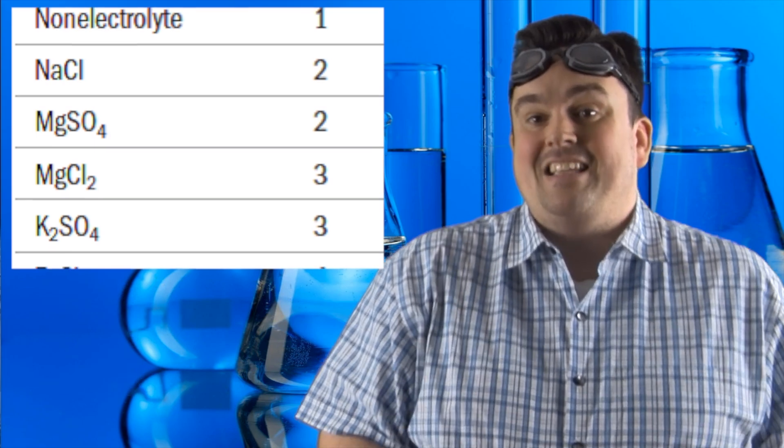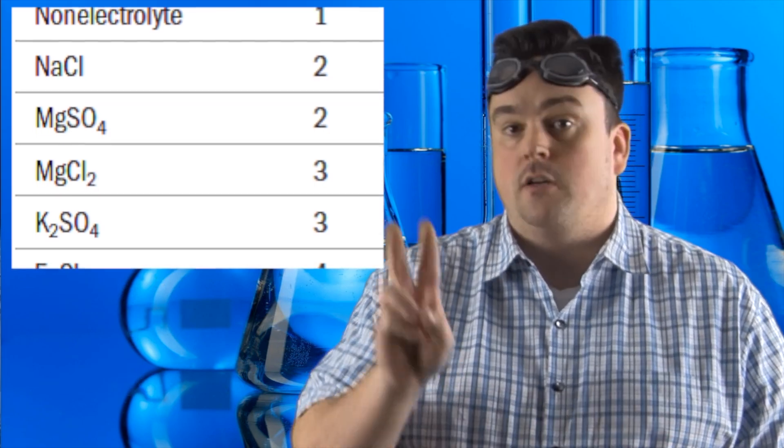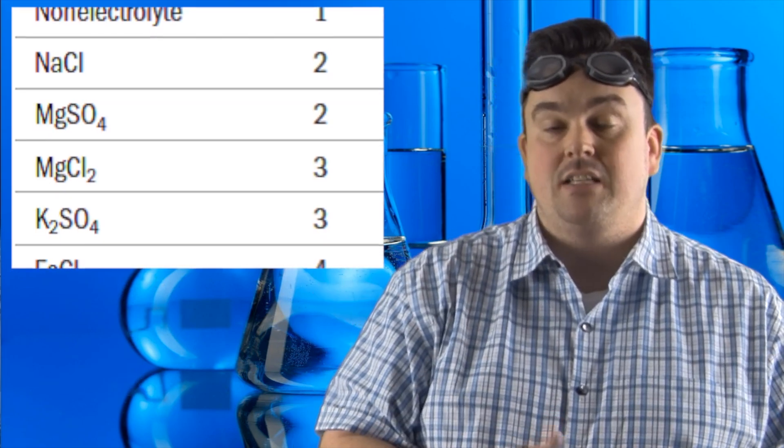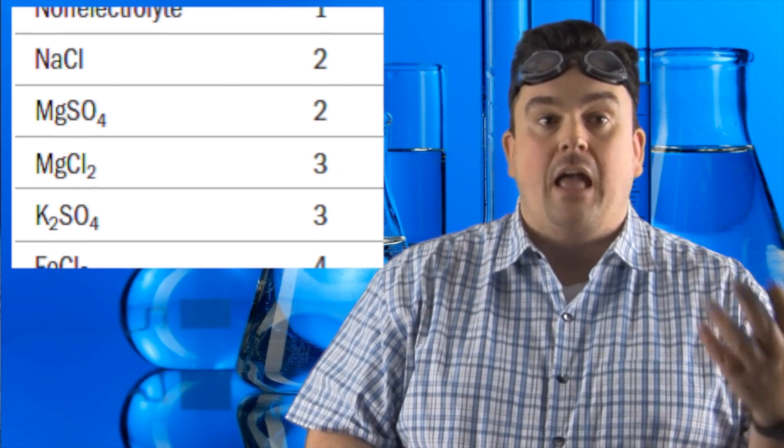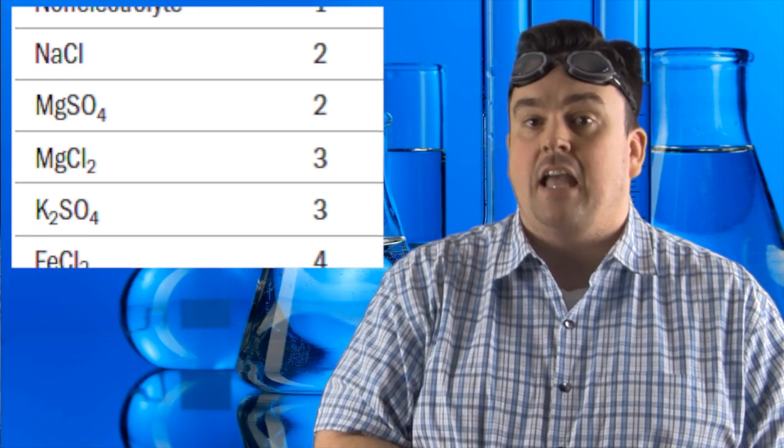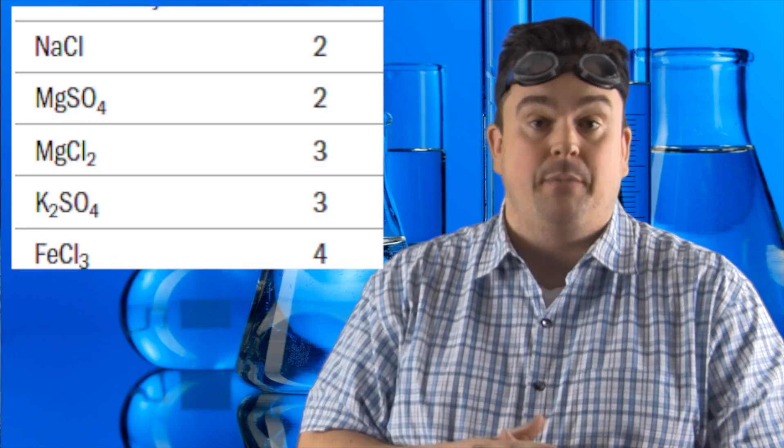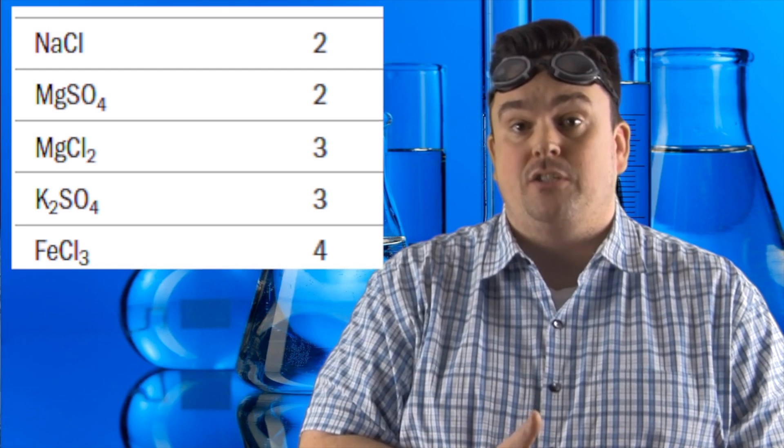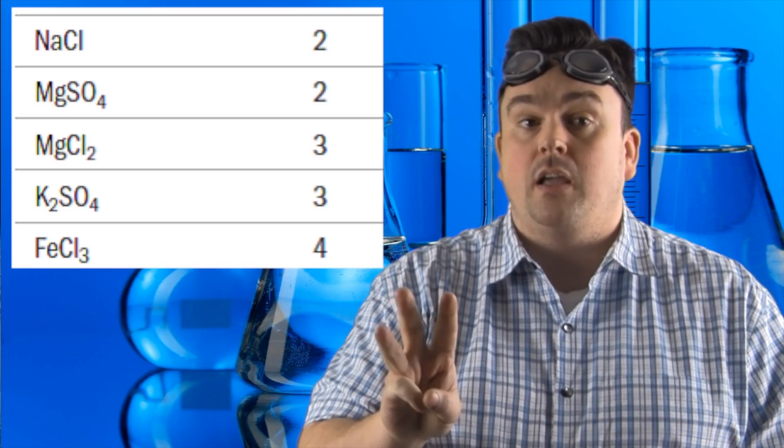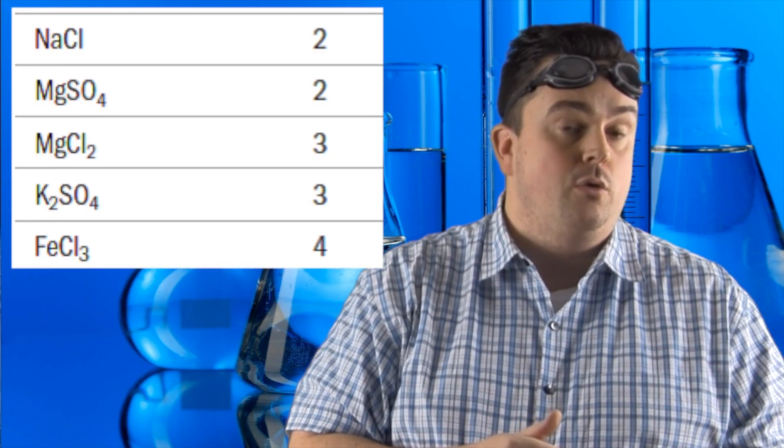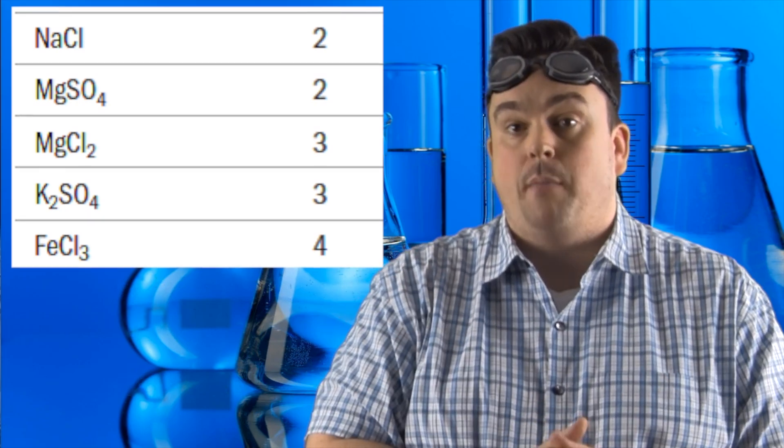Ionic substances do dissociate. For example, NaCl has a van't Hoff factor of two because you'll get an Na plus and a Cl minus. MgSO4 is also two because it's Mg plus two ions and the SO4 minus two polyatomic ion. MgCl2 has a van't Hoff factor of three because you'll get an Mg plus two and you'll get two Cl minus ions.